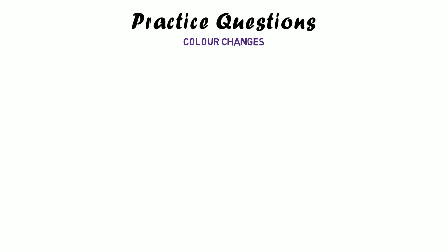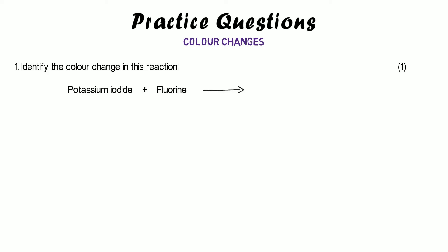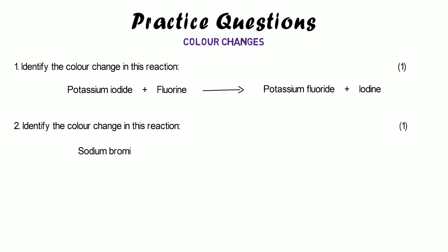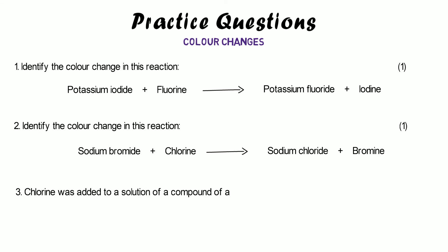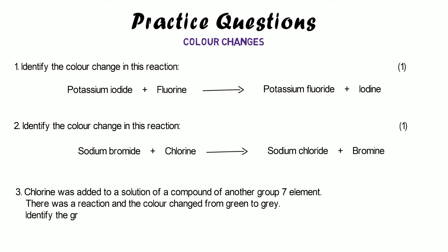Here are some practice questions about colour changes. Number one: identify the colour change in this reaction — potassium iodide plus fluorine produces potassium fluoride and iodine. You're looking for the colours of the halogens that are on their own at either side of the equation. Number two: sodium bromide plus chlorine produces sodium chloride and bromine. Number three, a slightly trickier question: chlorine was added to a solution of a compound of another group seven element. There was a reaction and the colour changed from green to grey. Identify the group seven element that was present in the compound. Pause the video and give these a try.